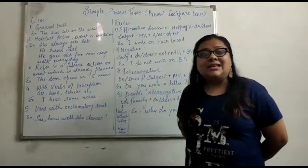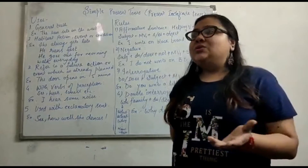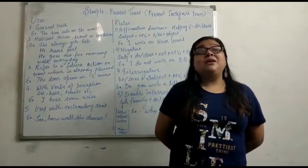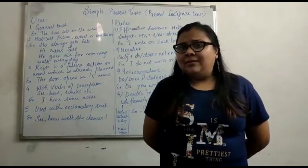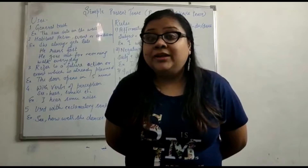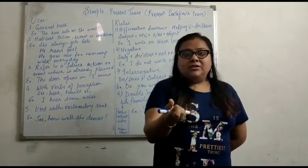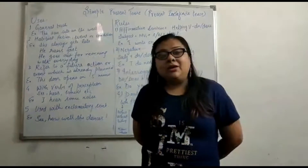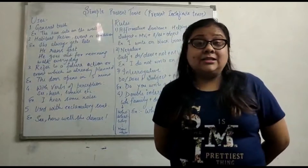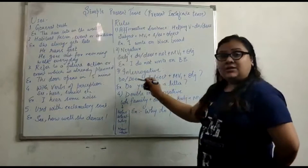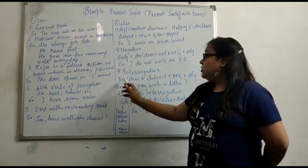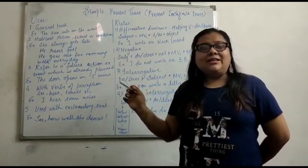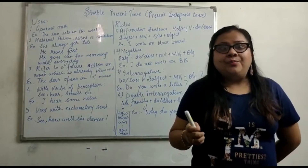Coming on to the third variety — interrogative sentences, meaning questioning. It is classified into two types: simple interrogative and double interrogative. Simple interrogative sentences can be answered in yes or no — for example: 'Are you coming?' Double interrogative requires a group of words to answer, such as 'What is your name?' The rule for simple interrogative is: do/does plus subject plus main verb first form and object. For example: Do you write a letter? Does she hear you?